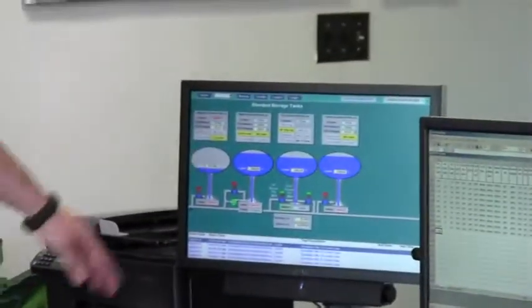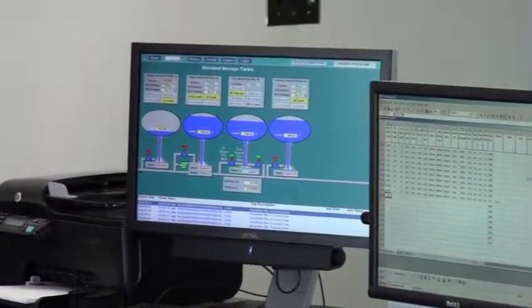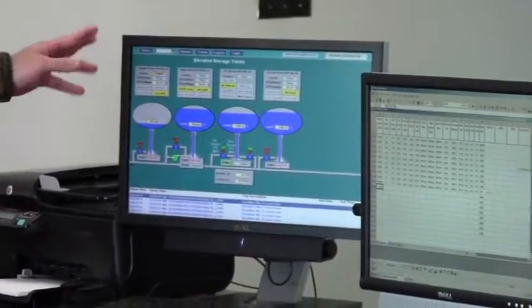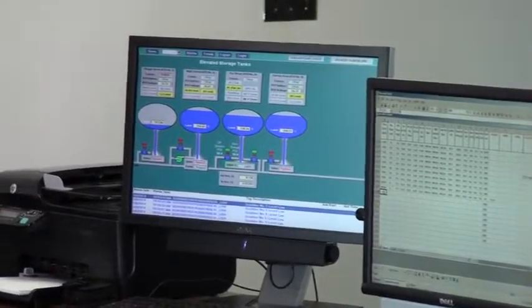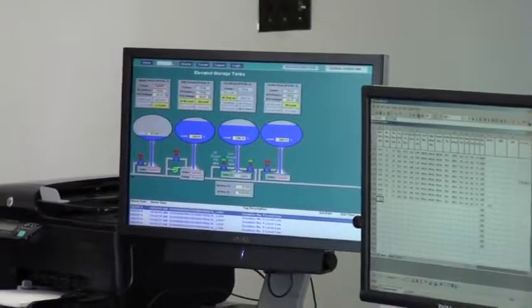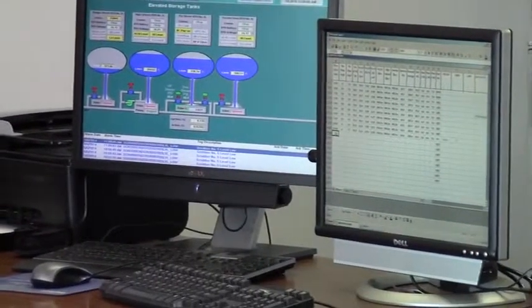It shows you our elevated storage tanks that are downtown. This one here, Bridge Street, is actually offline right now. In the near future we're able to look at taking that down because we have our Fry Street tank which is a two million gallon. It is enough to be able to supply pretty much most of the city of Viodosta without having that one.